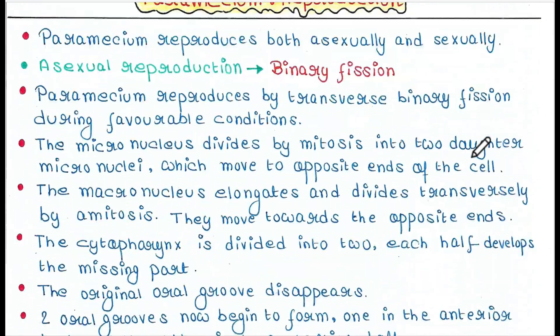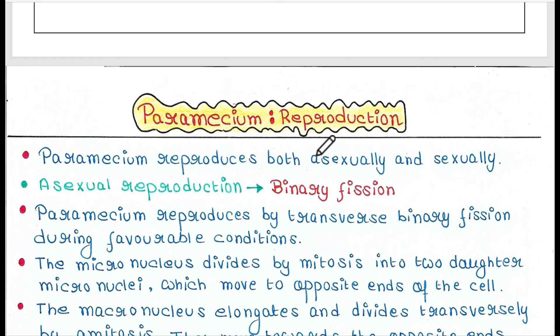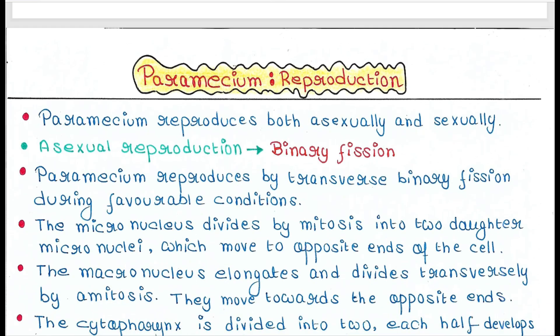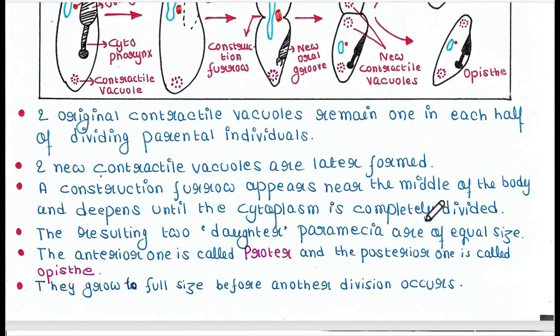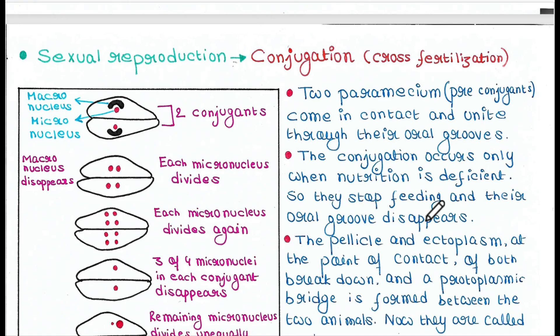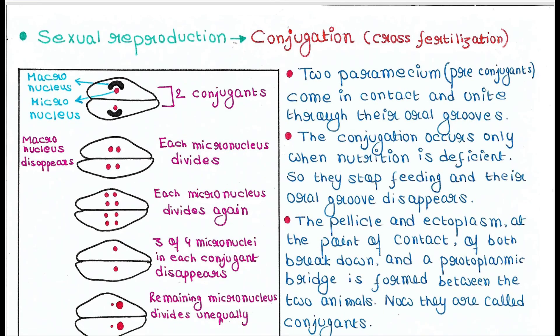In our last lecture, I talked about the reproduction of paramecium. Paramecium reproduces both asexually and sexually. Asexual reproduction takes place by binary fission, which I already explained in the last video. Sexual reproduction is of many types, and today I will specifically talk about conjugation.